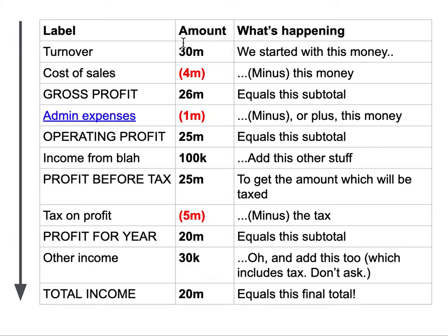In this example we start with 30 million of turnover — that's money coming into the company, that's the business the company is doing. We then have to subtract the cost of making things and delivering the services, and that's normally expressed as a negative in brackets. In company accounts, figures in brackets indicate money being taken away in the calculation. So 30 million minus 4 million gives us our first subtotal, which is gross profit. Capitalisation or bold text is a good indication that a number is a subtotal.